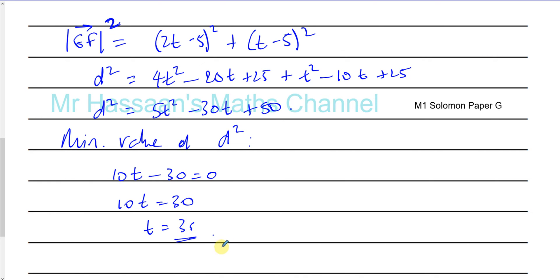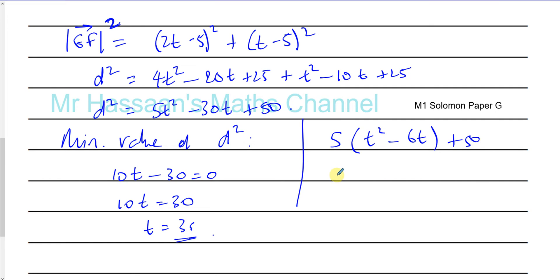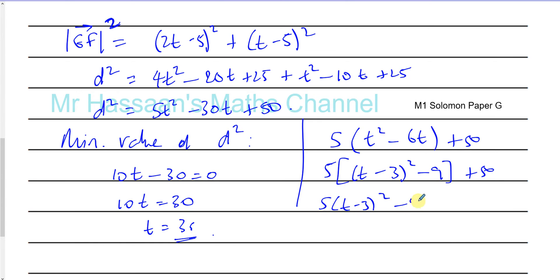We could also have done it by completing the square. Take 5 out: 5 times (t² minus 6t) plus 50. Then complete the square: 5 times (t minus 3)² minus 9 plus 50, which gives 5 times (t minus 3)² minus 45 plus 50, so 5 times (t minus 3)² plus 5.